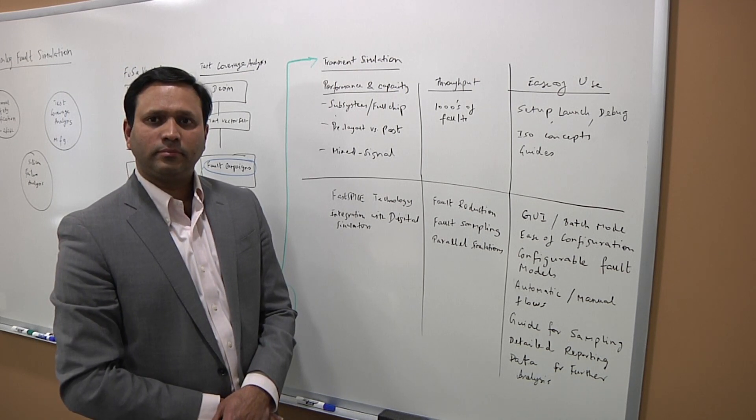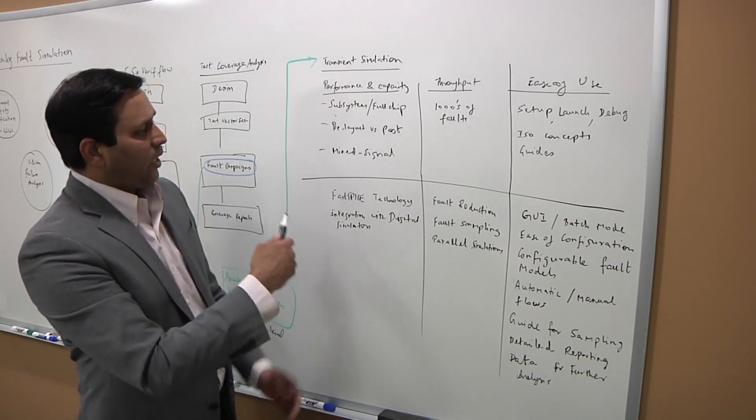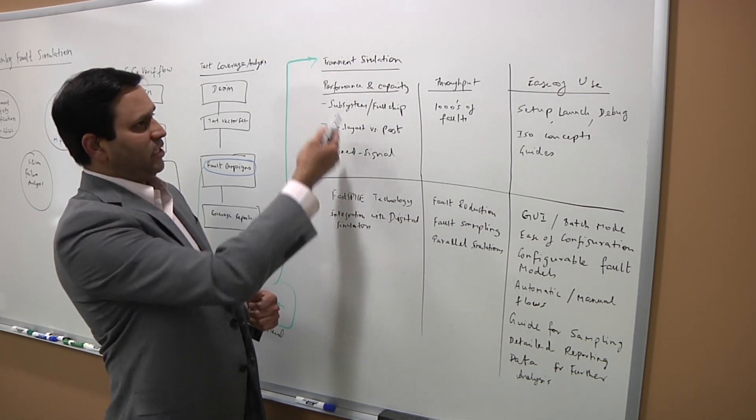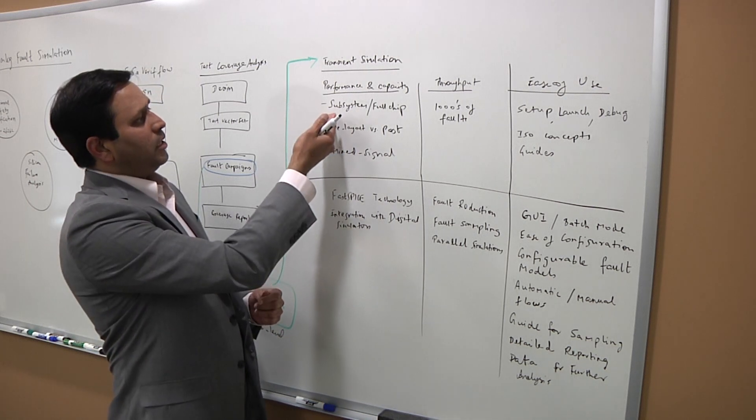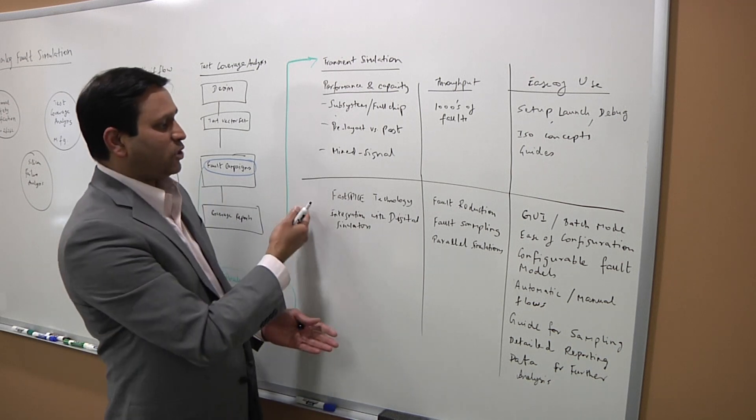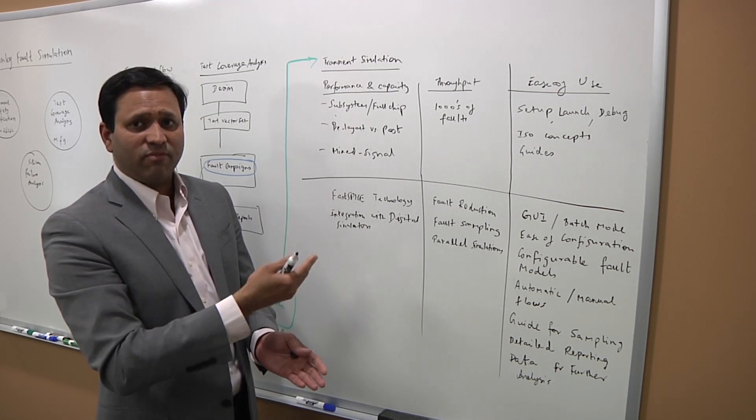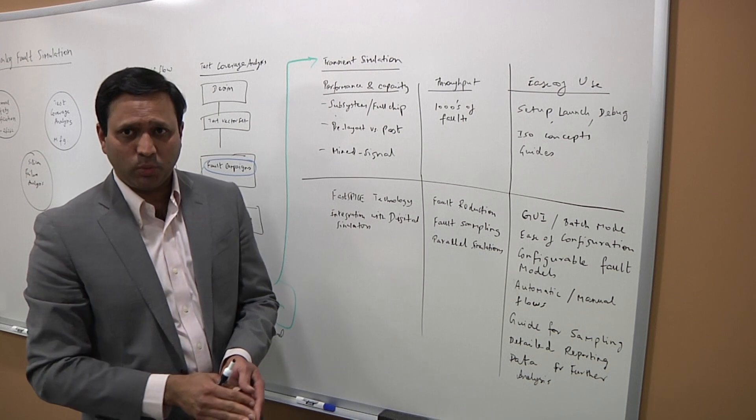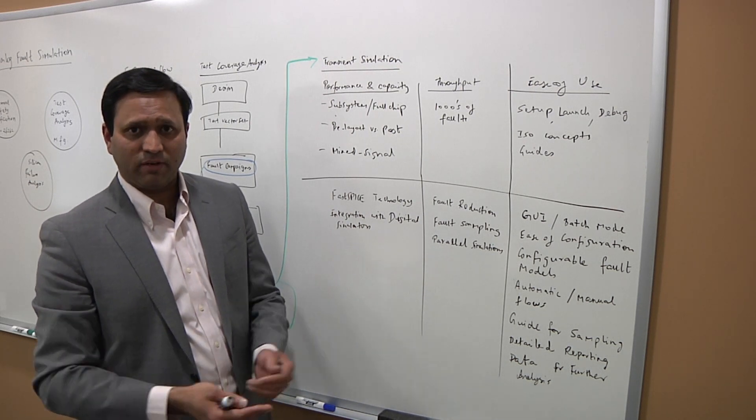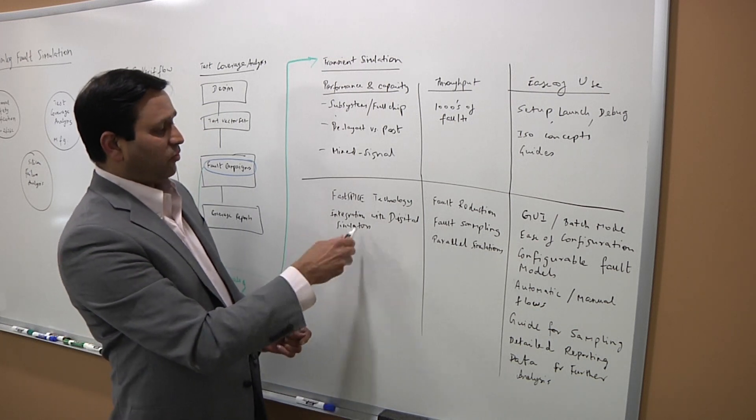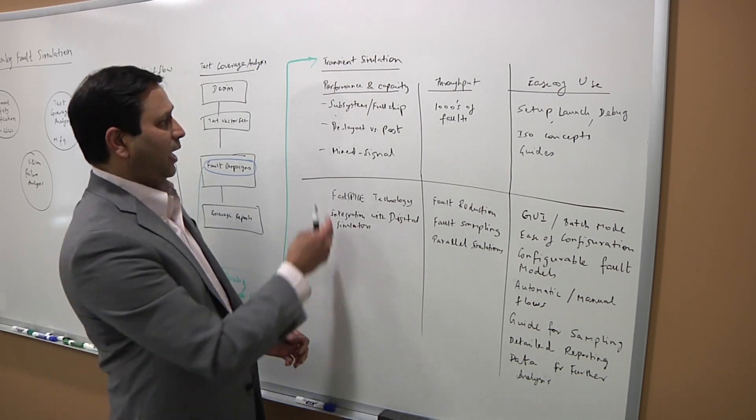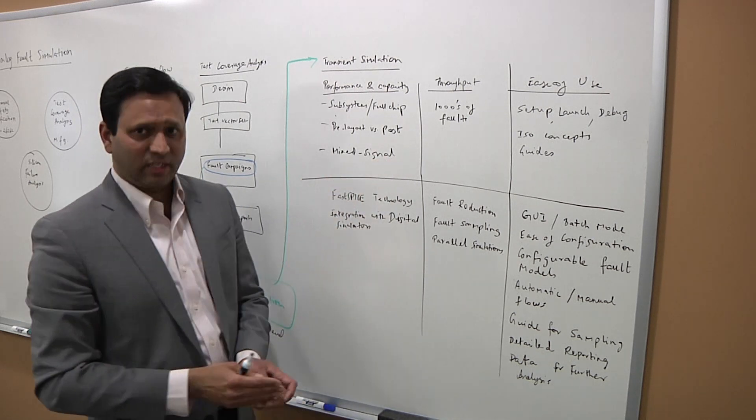So how do you go about solving these challenges that we've been talking about? Sure. So any commercial fault simulation solution needs to essentially comprehend these challenges, especially being able to enable the end user to simulate the subsystem and full-chip level. And that's where I think having a Fast-SPICE technology will help greatly because Fast-SPICE technology gives you the performance and the capacity, especially for subsystem and full-chip type analysis. And then also integration with class-leading or solid digital simulators. And that essentially enables the mixed signal aspect of it.